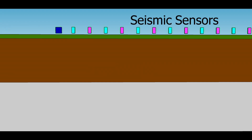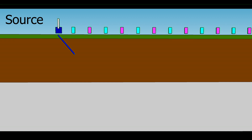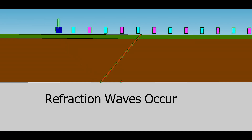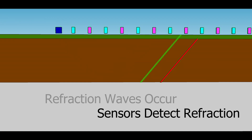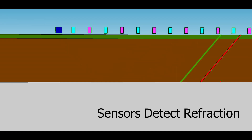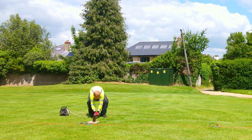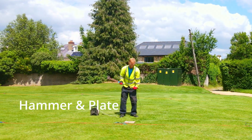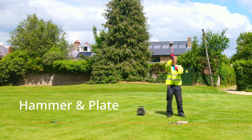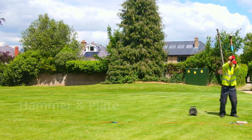Seismic refraction is carried out by creating a seismic wave and then recording the refracted wave using geophone sensors. Several seismic sources are used in Ireland for depth-to-rock studies.